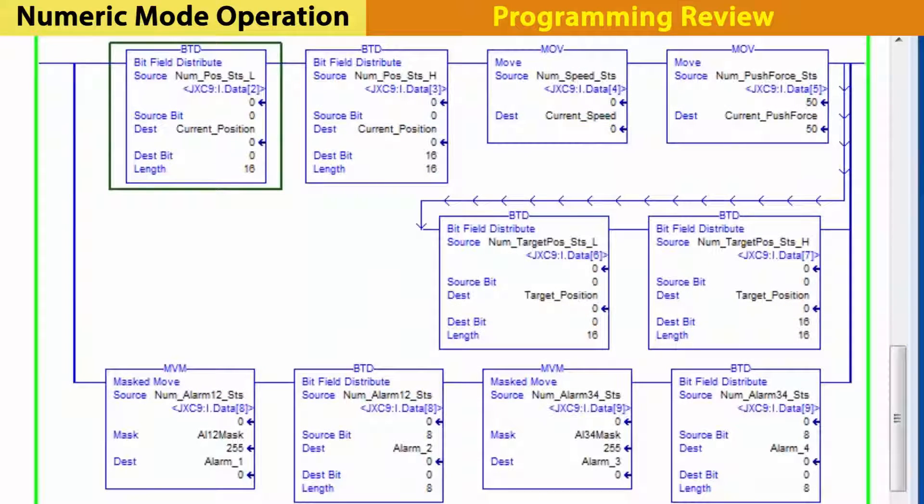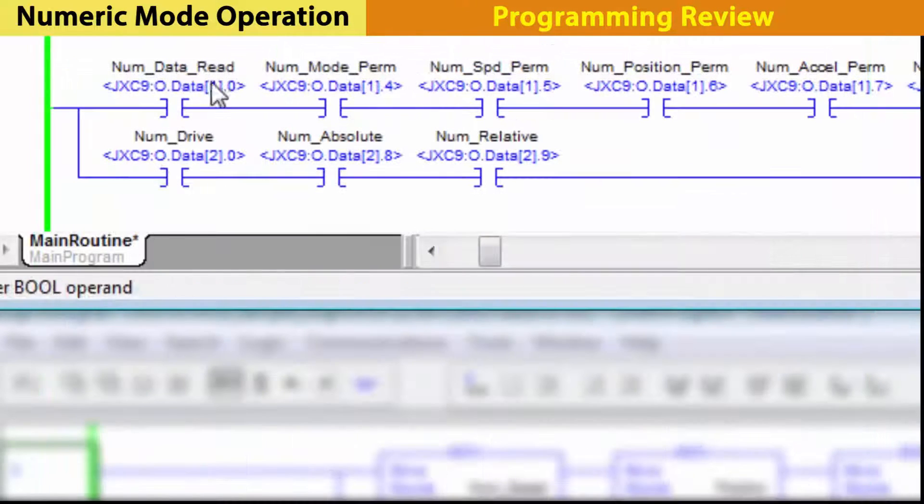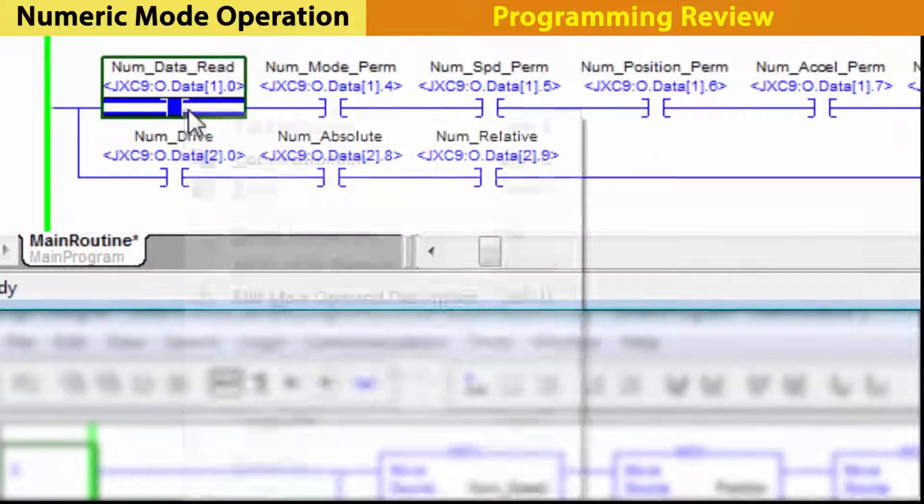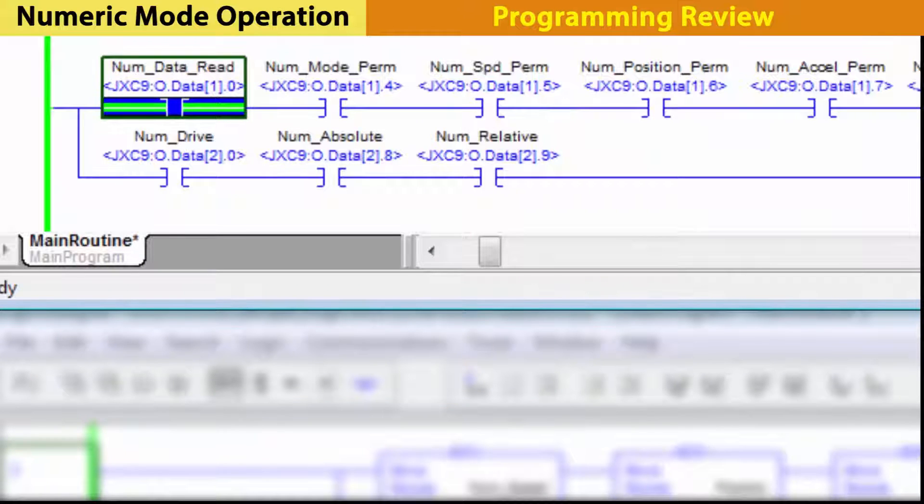Then, these data tables find and allocate the numeric variables being read from the JXC91 to the PLC. To continue, turn on numeric read. Then, all table data will come in from the controller.